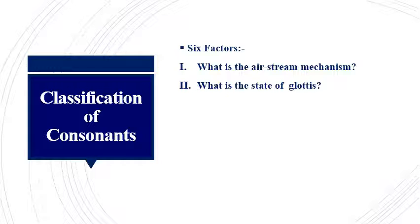When the vocal cords are held wide open, air can pass freely through them. The sounds produced with wide open vocal cords are called voiceless sounds. Then, when the vocal cords vibrate — held loosely together — the sounds produced are called voiced sounds. So the state of the glottis decides whether a sound is voiced or voiceless, and this should also be taken into account.